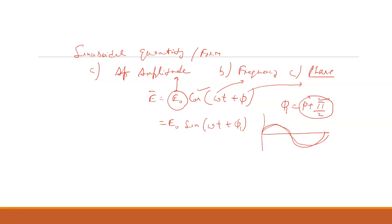Omega is dependent upon time, while phi is not dependent upon time — it is dependent upon the position vectors x, y, and z.